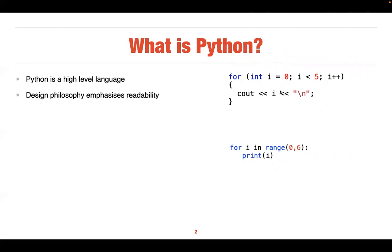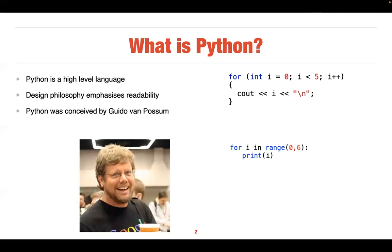The philosophy emphasizes readability. For example, here's a section of a program that prints values of i from zero to four. In C++ you have to specify i++, i should be less than five, and so on. In Python you simply specify the range — it's much simpler.